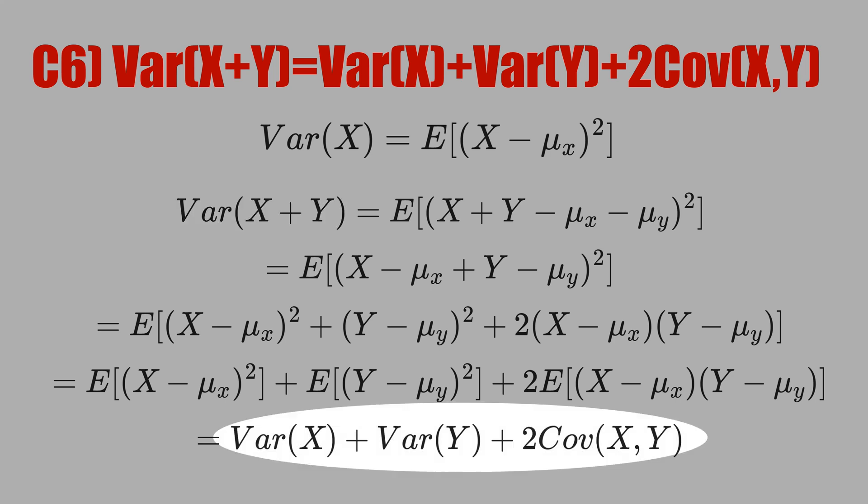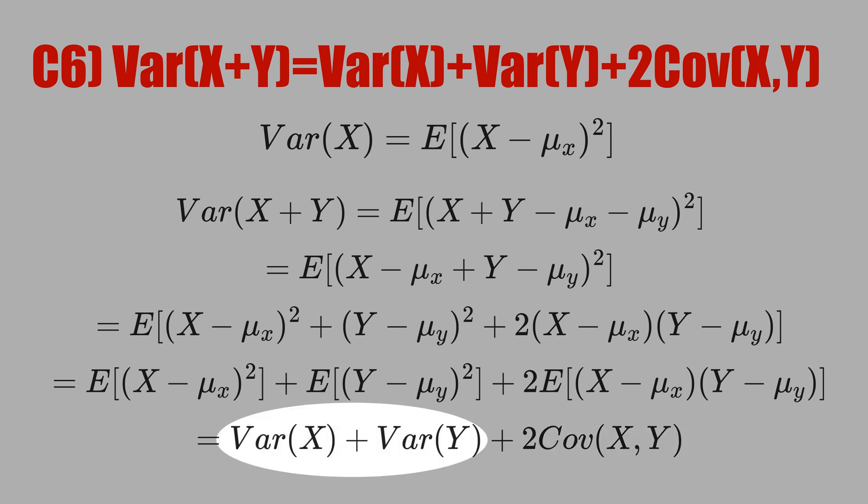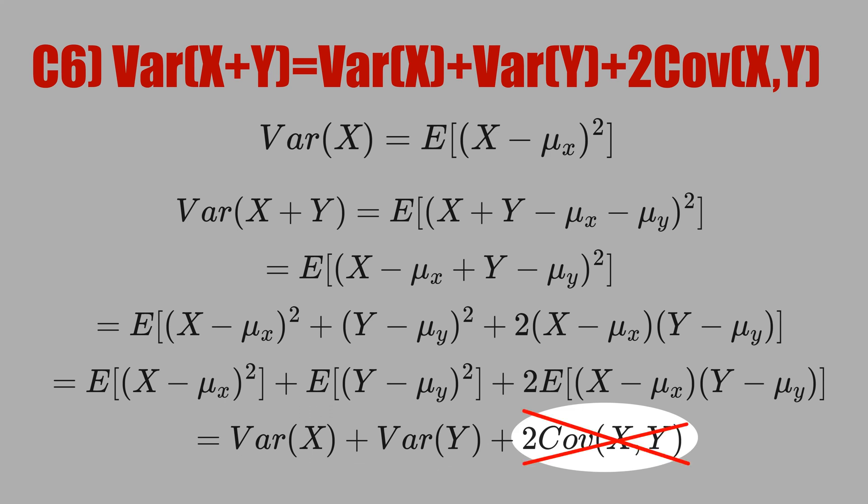This equation is telling you that if you want to minimize risk, you want the covariance term to be negative — meaning you want to buy negatively correlated assets. In many statistical tests you see only the variance of X and variance of Y terms, because those tests assume X and Y are independent. Then the covariance term vanishes, because if X and Y are independent, covariance equals zero.